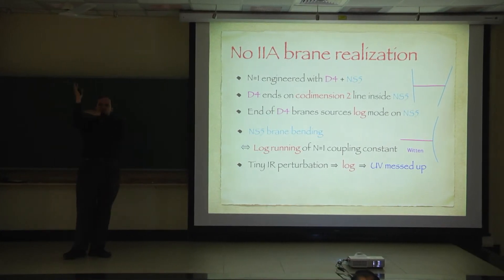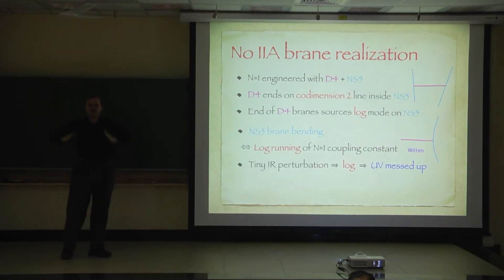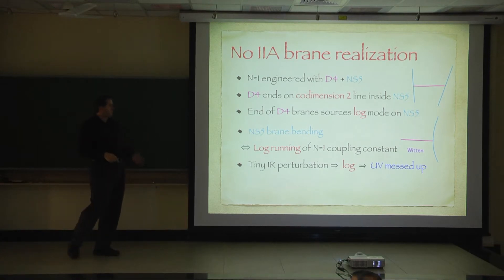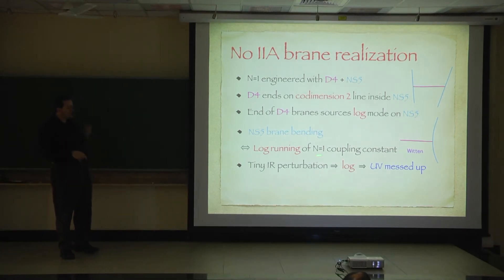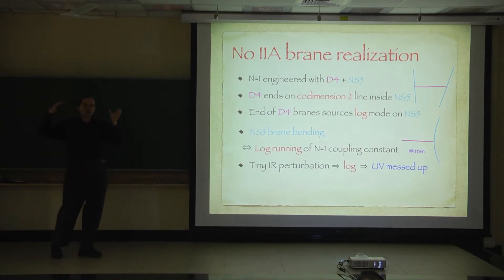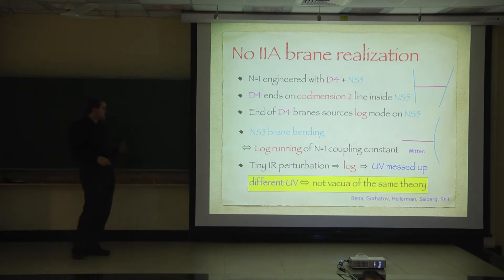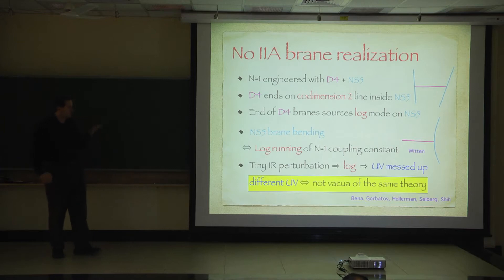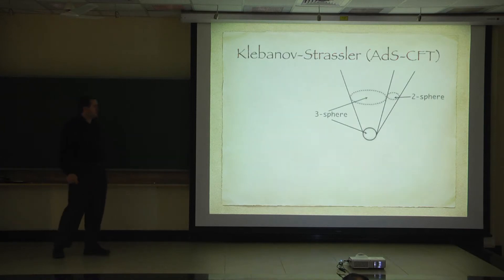This was shown by Witten many years ago that this log mode makes the NS5 brane bend, and this bending corresponds to the running of the coupling constant of this gauge theory. However, when you have a log mode and you do a small perturbation of the infrared, the log doesn't decay at infinity. A tiny infrared perturbation can mess up the UV. That's exactly what's happening with this brane construction.